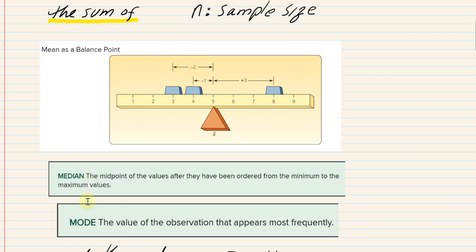The other two measures of central tendency are median and mode. The median is the middle value in an ordered array. The data must be ordered — order is the keyword here. If you're working with raw data and doing this by hand, you need to order them. It's the middle value in an ordered array as you order these from low to high.